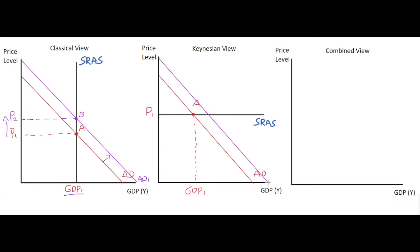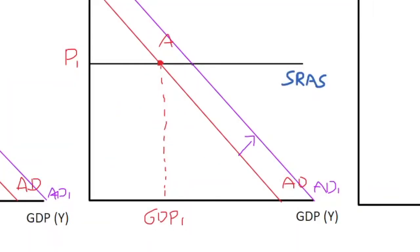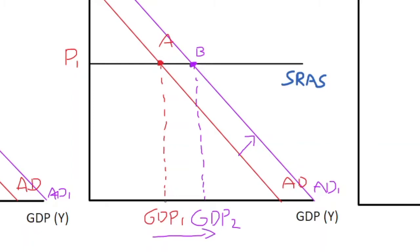Let's try the exact same stimulus to the economy — say monetary policy again where interest rates are dropped — so aggregate demand in this case again shifts right. Both schools of thought see the exact same impact on aggregate demand; there's no difference there. However in the Keynesian case, where we have spare capacity in the economy, the price level stays exactly the same at P1.